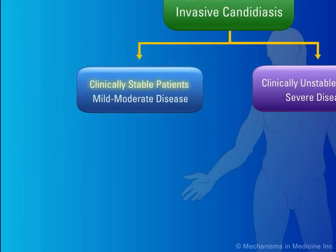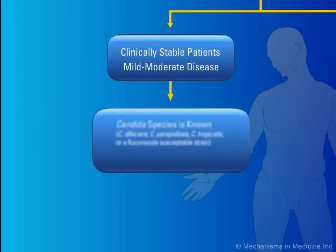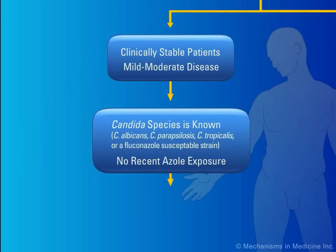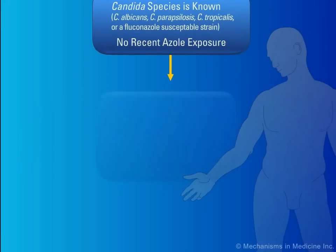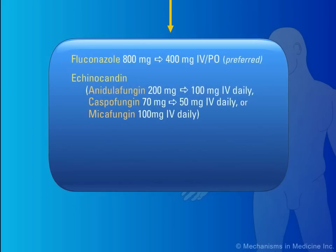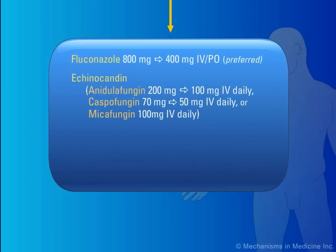If the patient is in a stable condition, the Candida species is known, and there has been no recent azole exposure, the following therapeutic considerations are preferred. Treatment with daily fluconazole IV with subsequent step-down therapy to oral fluconazole is preferred. An echinocandin, such as anidulafungin, caspofungin, or micafungin, may also be used, but the patient may be transitioned to oral fluconazole when stable.